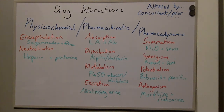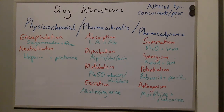An example of synergism is the interaction between propofol and remifentanil. We have potentiation, which occurs when the action of one drug is increased by the administration of another drug — for example, probenecid increases the action of penicillin by reducing its renal excretion. And finally, we have antagonism — the best example of this would be naloxone antagonising the effect of morphine directly at the receptor site.